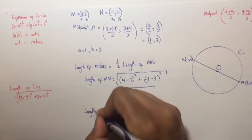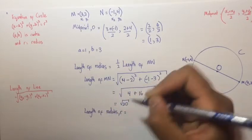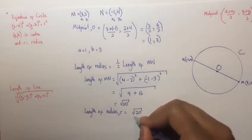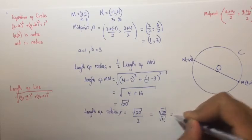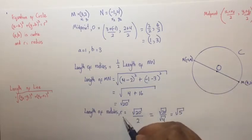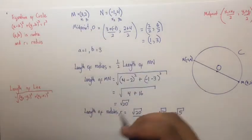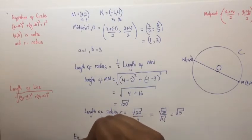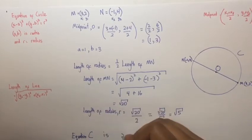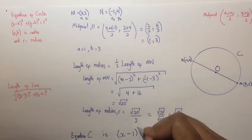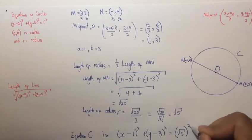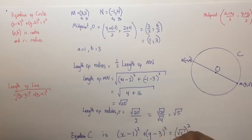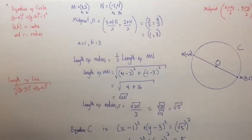So the length of the radius r = √20 / 2 = √20 / √4 = √5. So this is our value for r. Substituting these values for r, a, and b into the equation of a circle, we get the equation of C: (x − 1)² + (y − 3)² = (√5)², which is (x − 1)² + (y − 3)² = 5. And that is the equation of the circle.